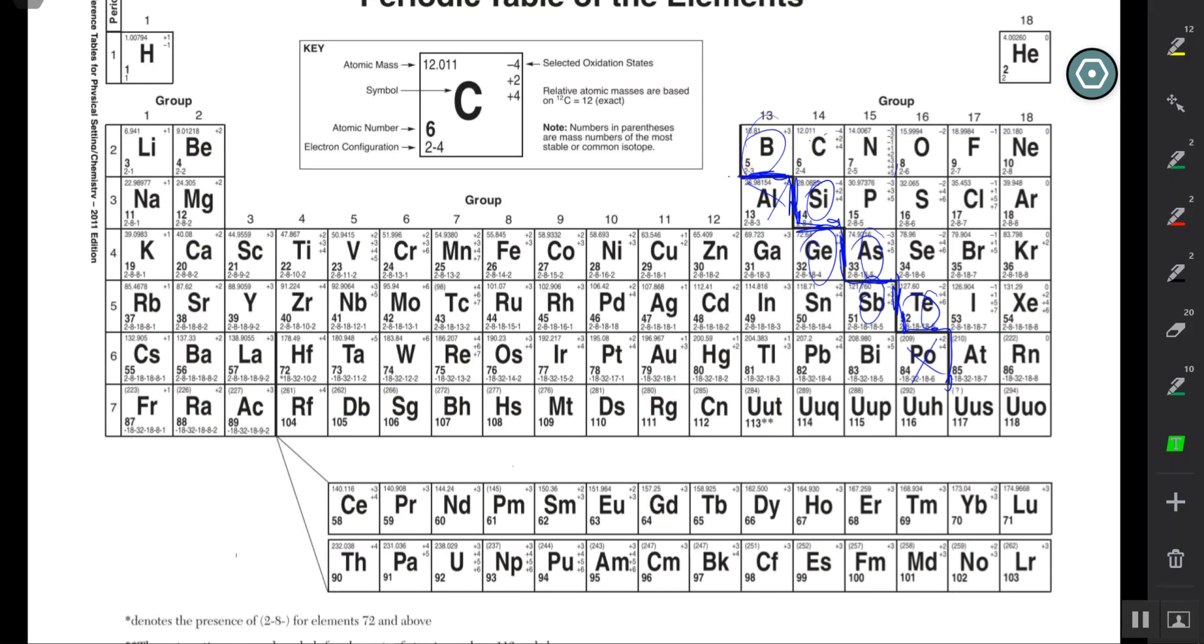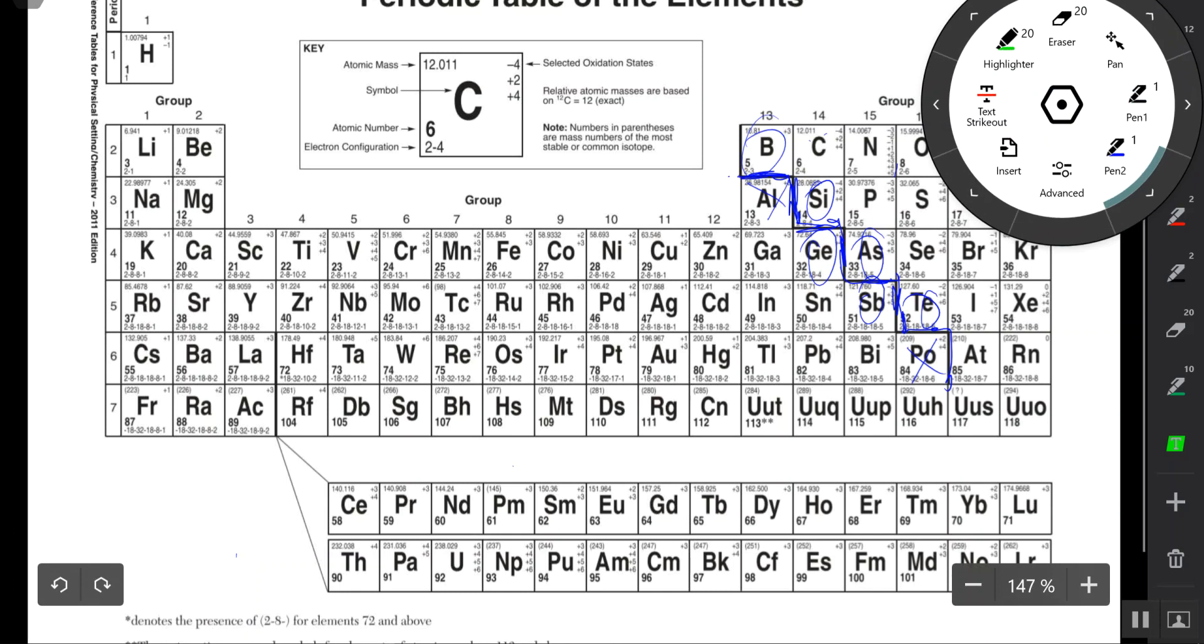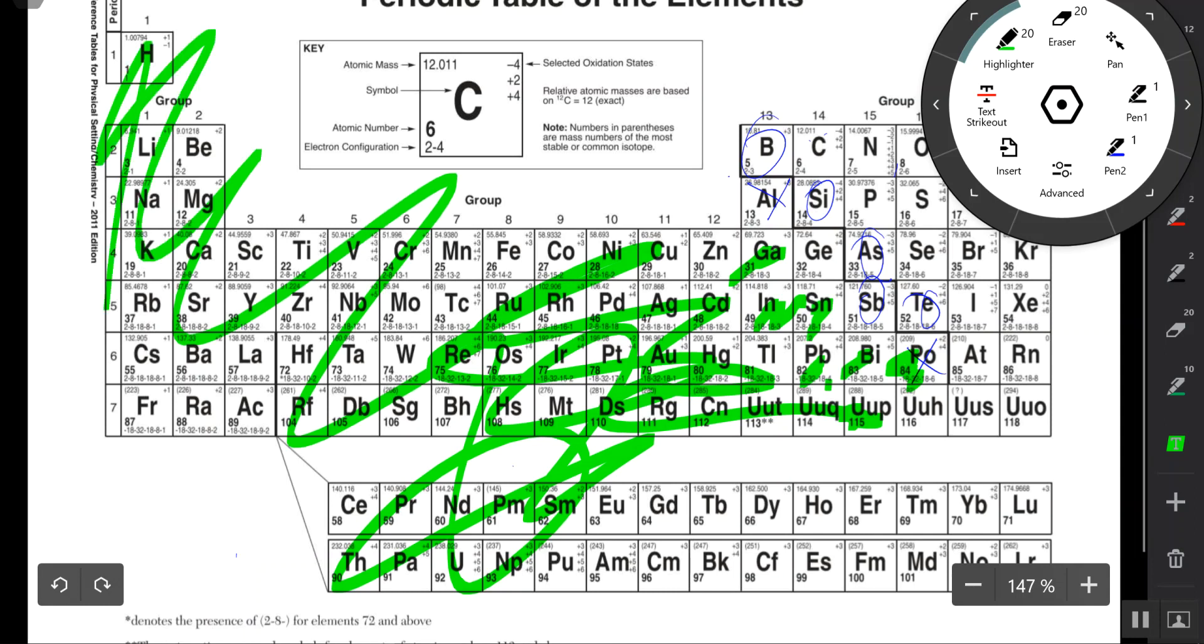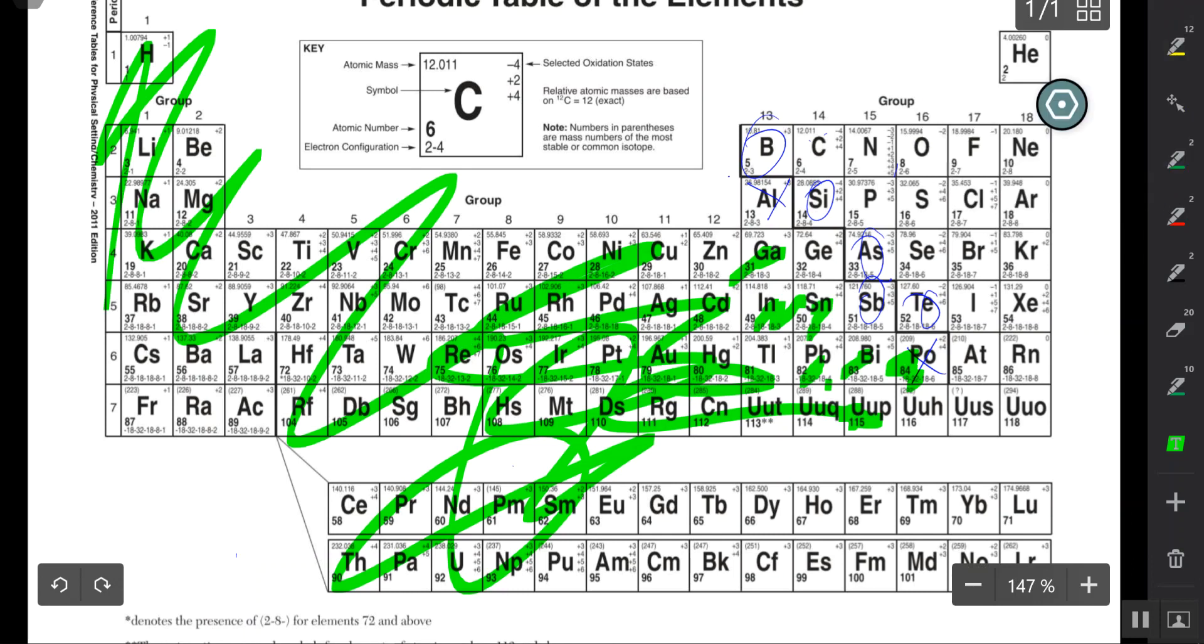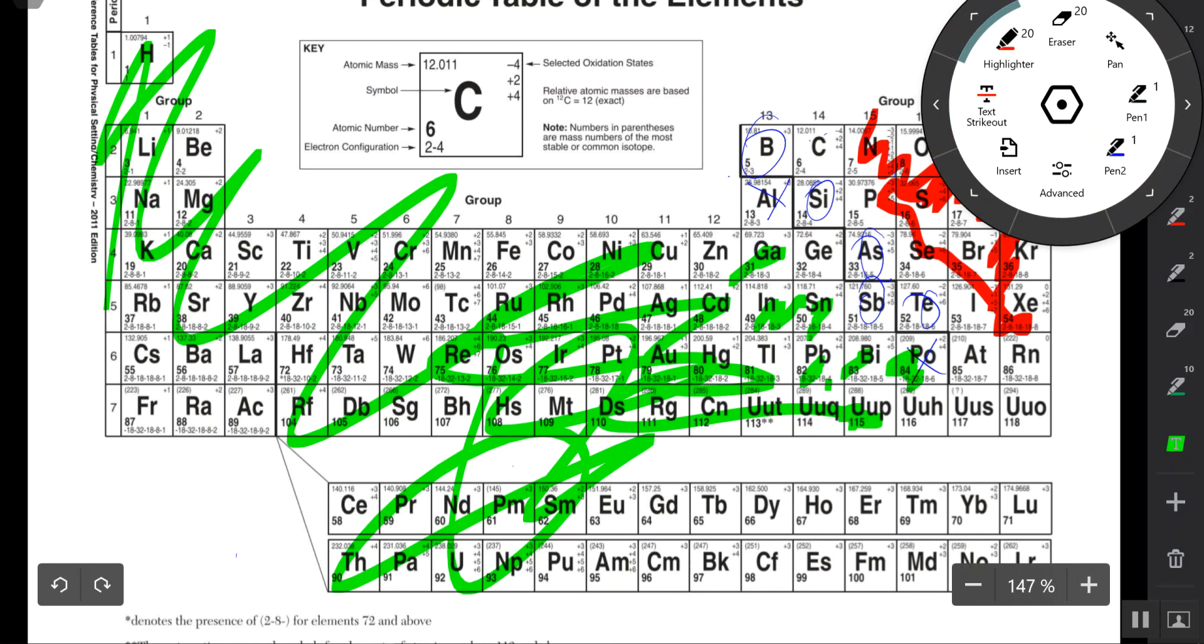Metalloids are simply a combination - they have characteristics of metals and non-metals. So everything on the left side here, highlighted in green, are examples of metalloids. And all these elements highlighted in red are examples of non-metals.